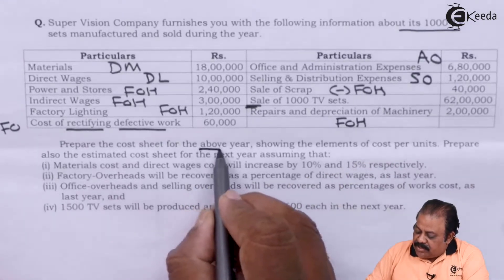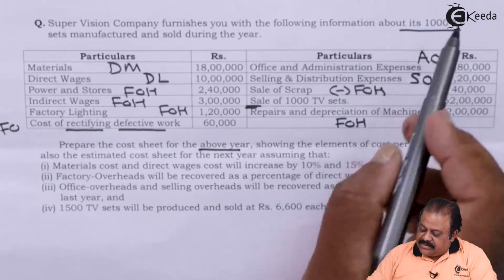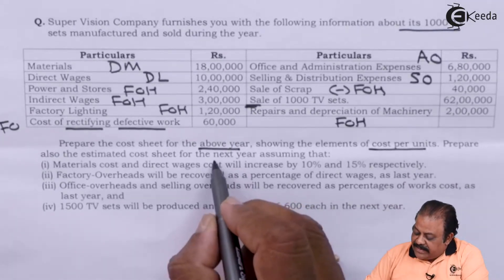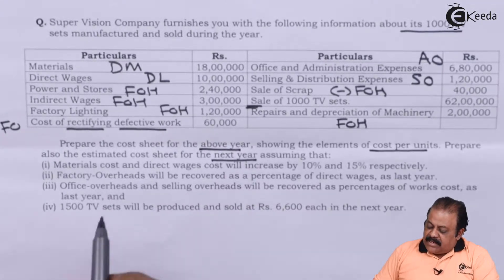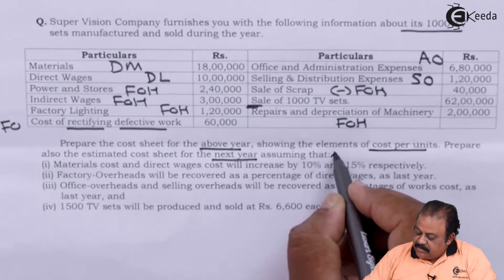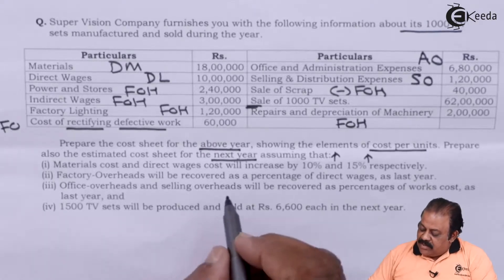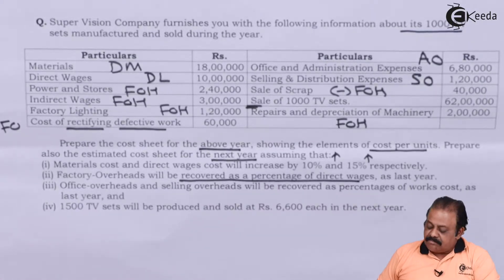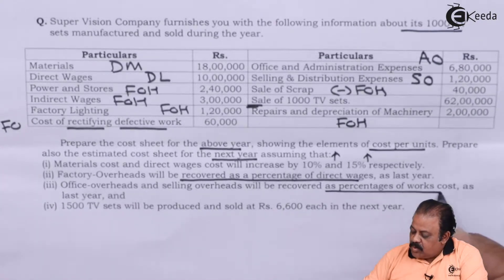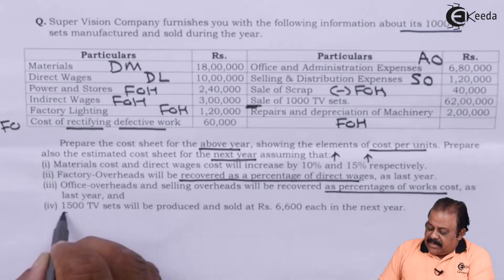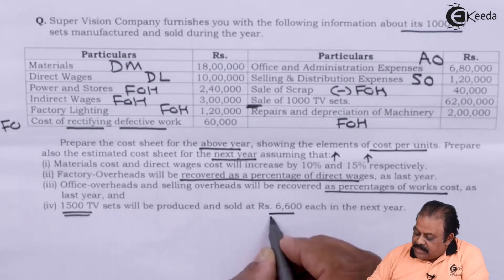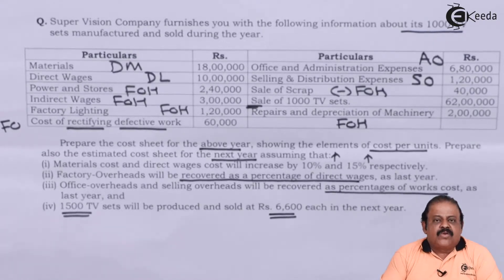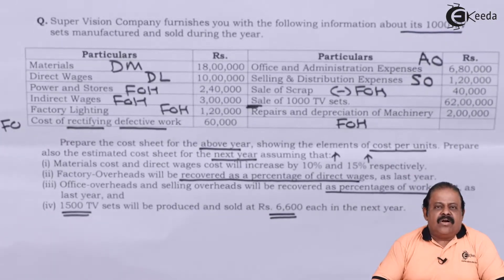Prepare the cost sheet for the above year, where we have produced 1000 TV sets, showing the elements of cost per unit. Prepare also the estimated cost sheet for the next year, assuming that material cost and direct wages cost will increase by 10% and 15%. Factory overheads will be recovered as a percentage of direct wages as of last year. Office overheads and selling overheads will be recovered as a percentage of works cost as of last year. 1500 TV sets will be produced and sold at a price of Rs. 6600 each in the next year.